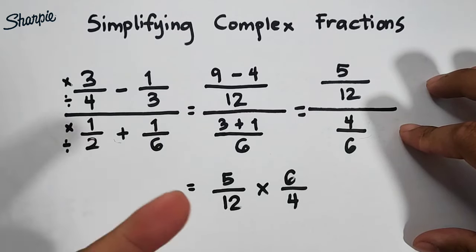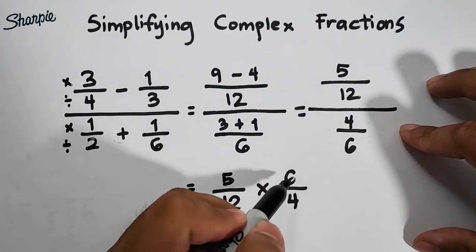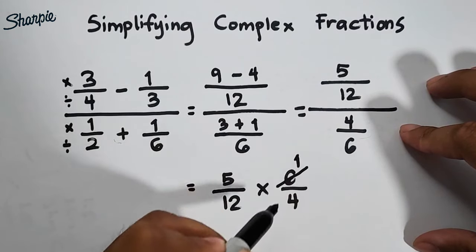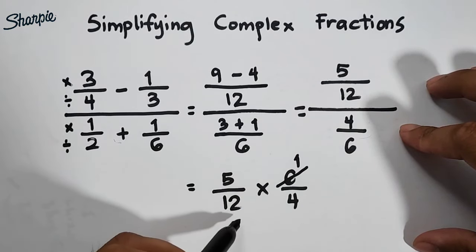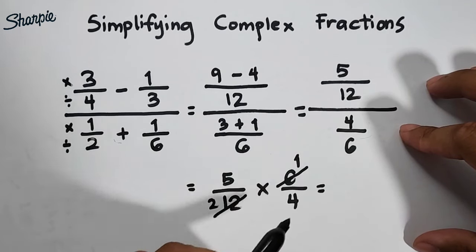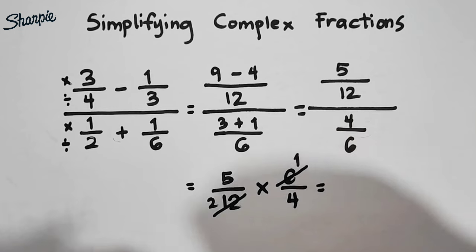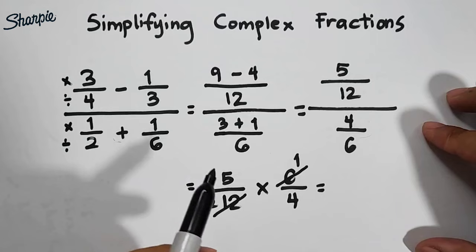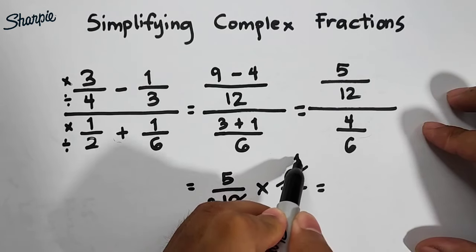So we can eliminate this 6 and it will become 1 because 6 divided by 6 is 1. And then 12 divided by 6 is 2. So the purpose of it is to simplify or to lessen the number that we're going to use in this formula.